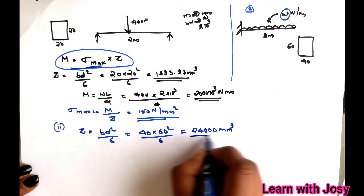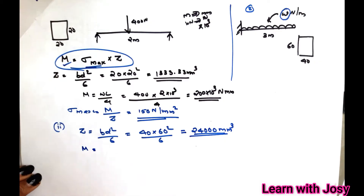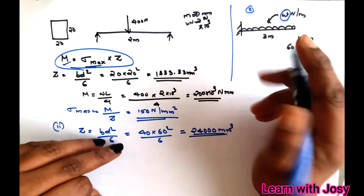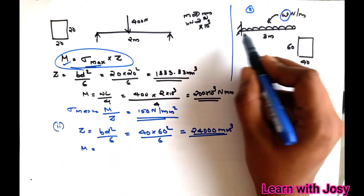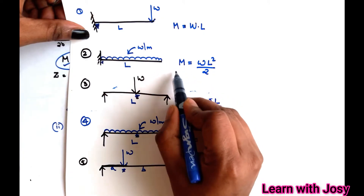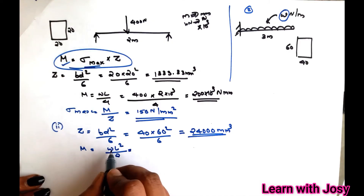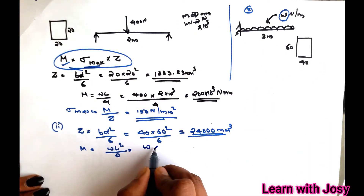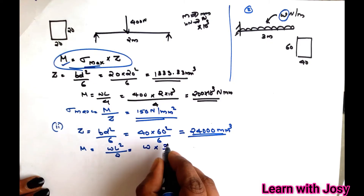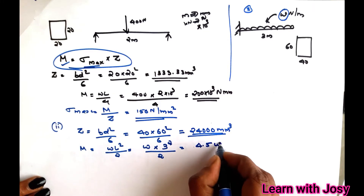Now we find the maximum bending moment for the cantilever with UDL. The equation is M = wL²/2. Substituting L = 3 meters: M = w × 3² / 2 = 4.5w N·m.